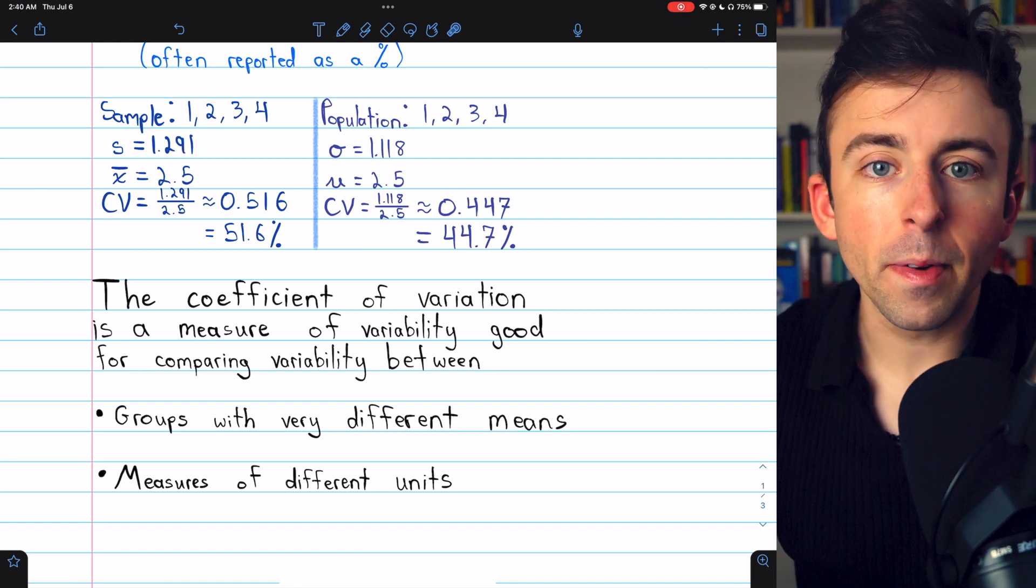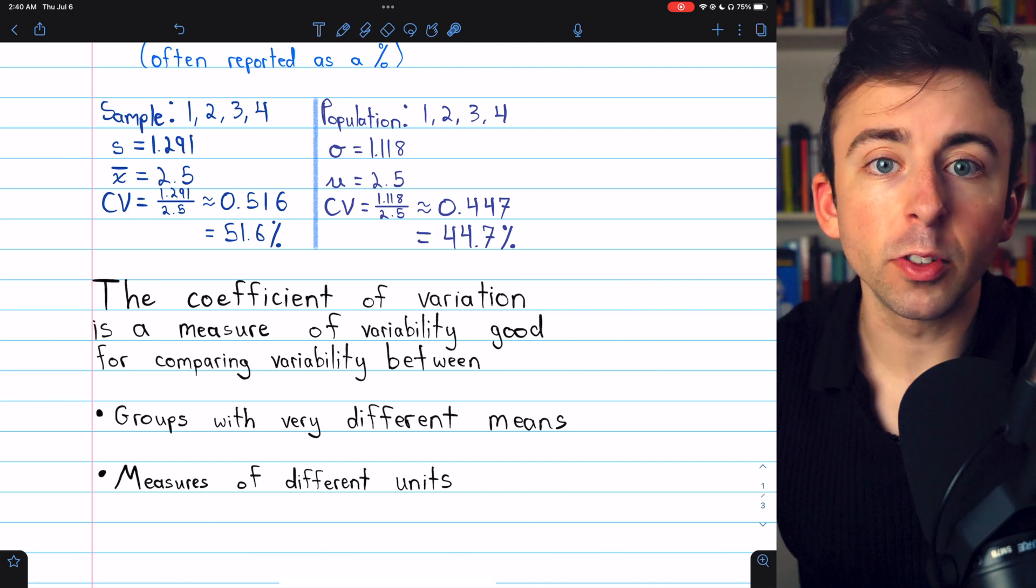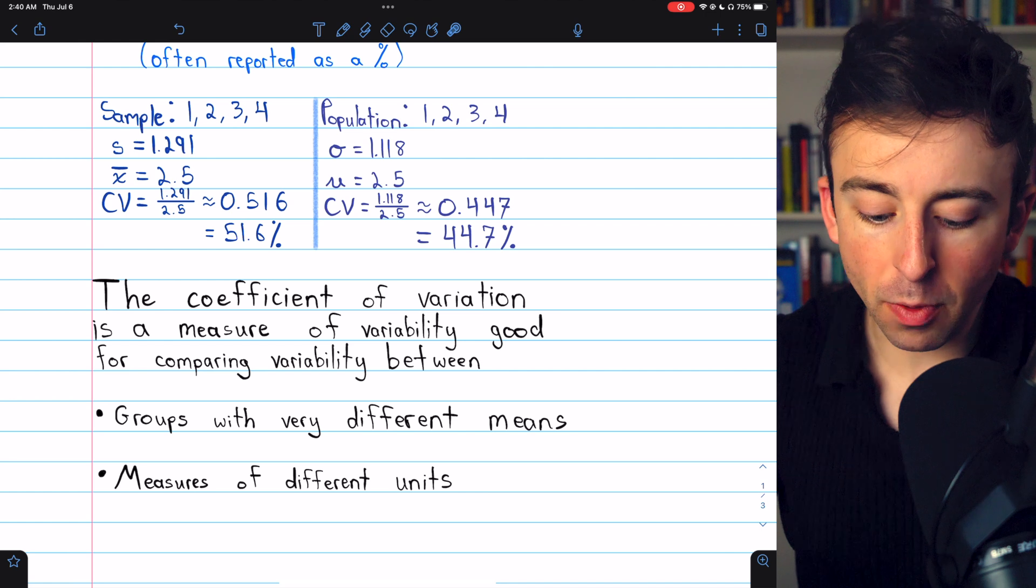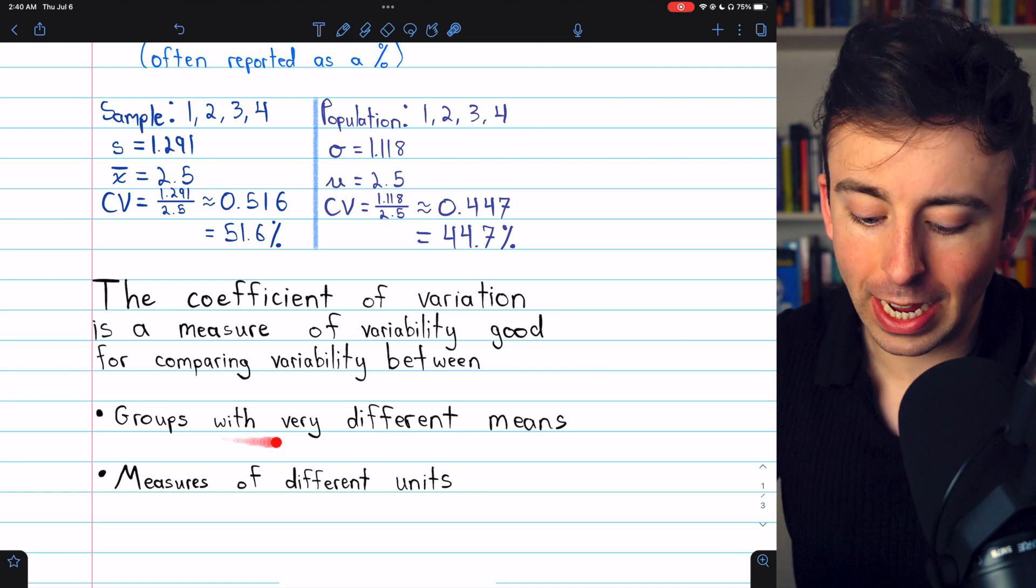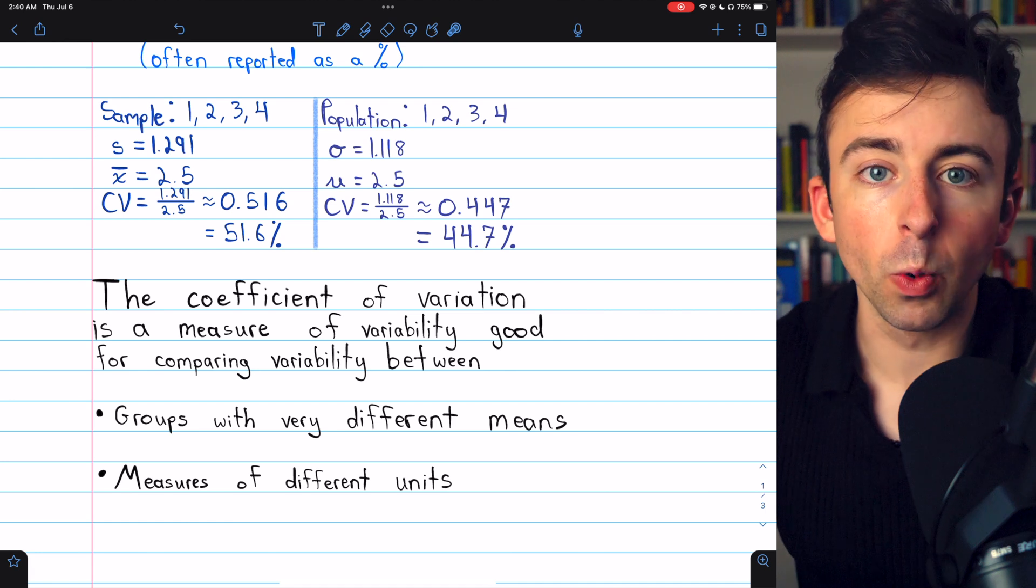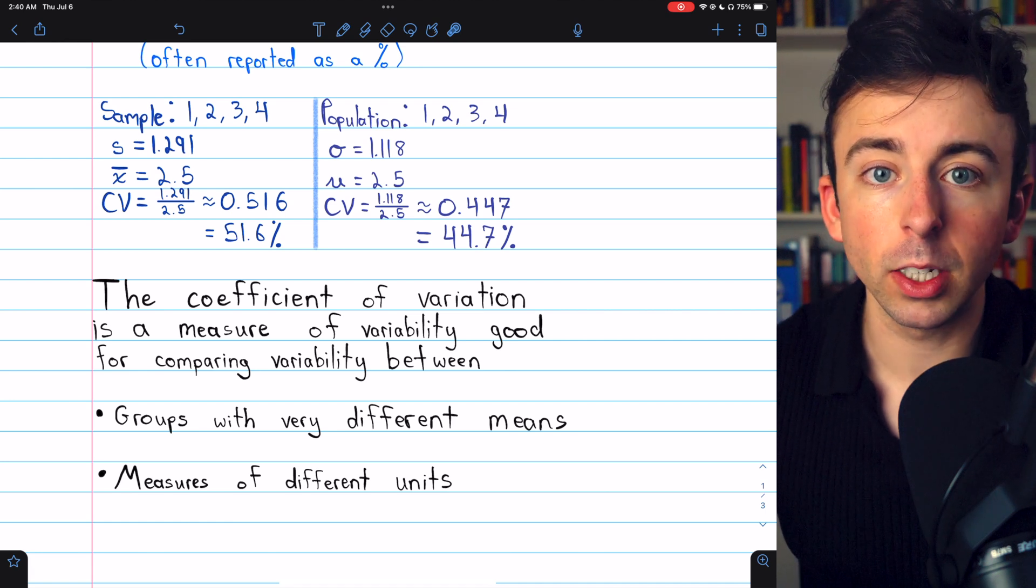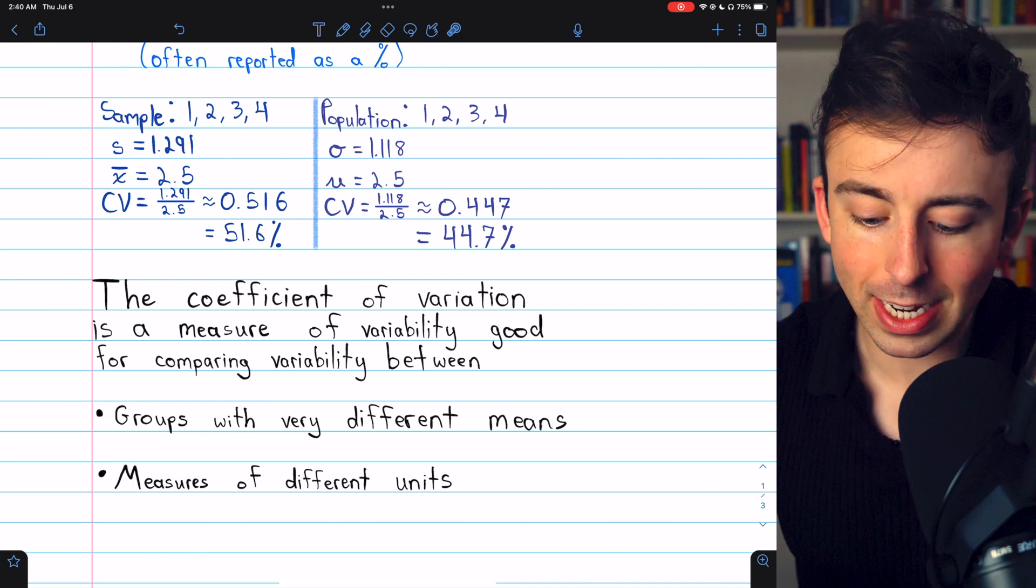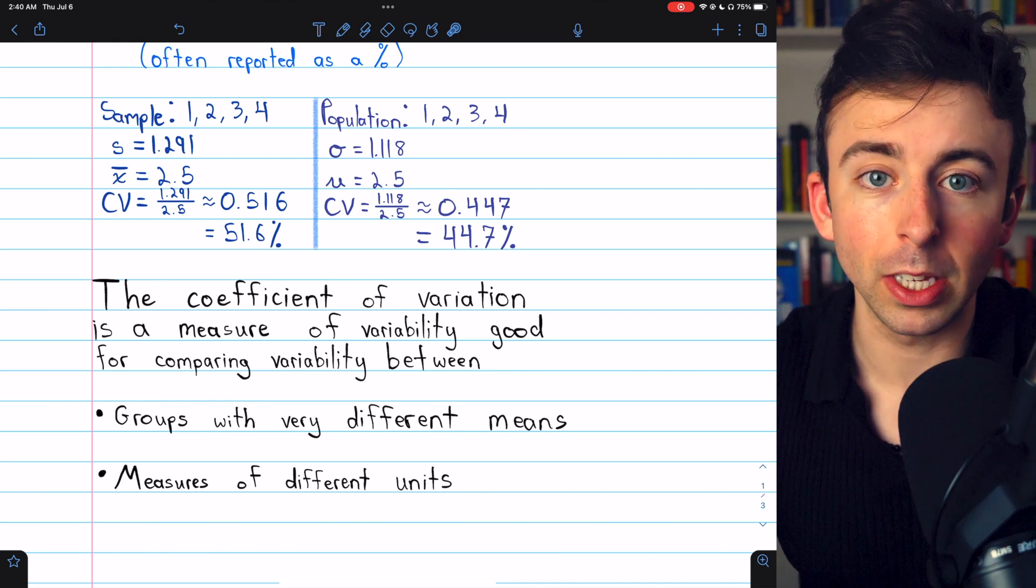For example, if you were trying to compare variabilities of tuitions between public schools and ivy league schools, you might want to use the coefficient of variation, because the means for those groups would be quite different. Or if you were trying to compare something between two different currencies, the units would be different, and so to compare variability, the coefficient of variation could be useful.